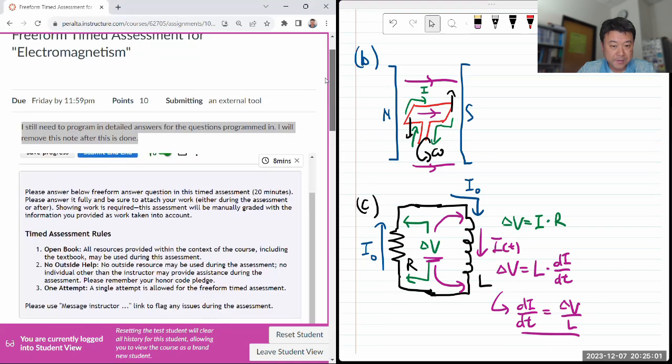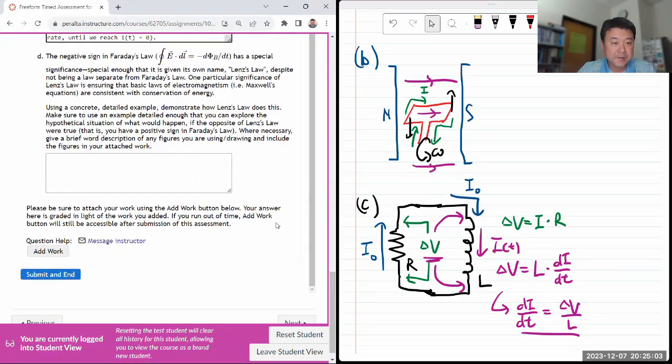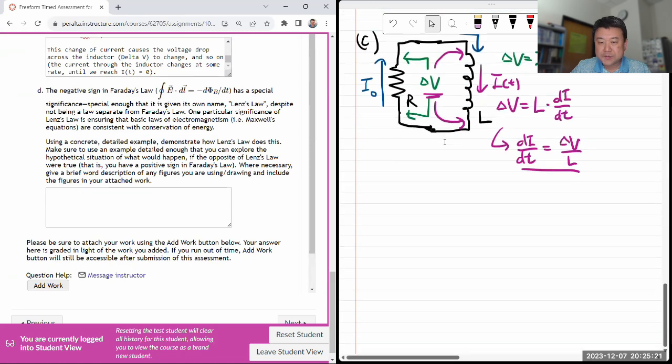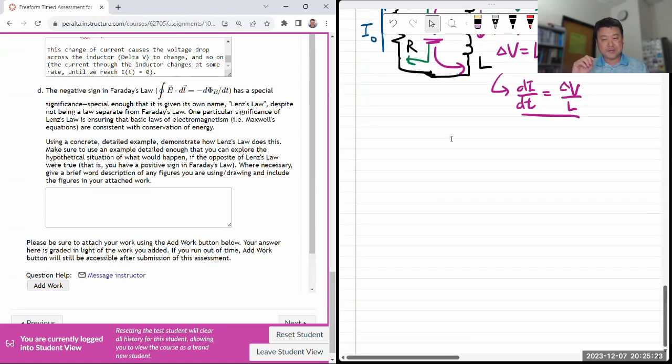Alright, let's keep going. Do I have five minutes? Eight minutes. Okay, enough time. Yeah. The negative sign in Faraday's law has a special name. Lenz's law. One person can say it's entering the conservation of energy. So using a concrete detailed example to demonstrate how Lenz's law does this. Okay. So the example that I like the best because it's a classic example is this one.